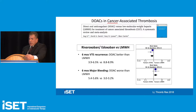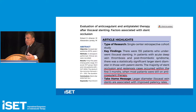Regarding cancer: DOACs are now better than low molecular weight heparin for recurrent thromboembolism, at least in this meta-analysis for cancer patients — but DOACs fared worse than LMWH for bleeding in this meta-analysis. As far as stents, it's mostly anecdotal and conversational — what you learn at meetings. There isn't much published data.